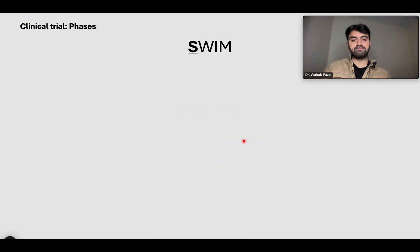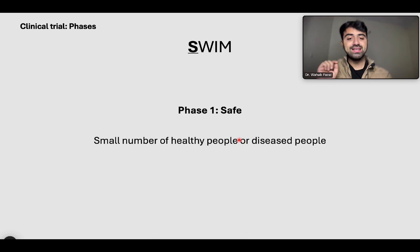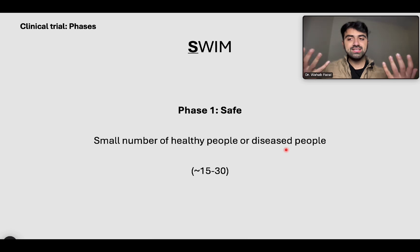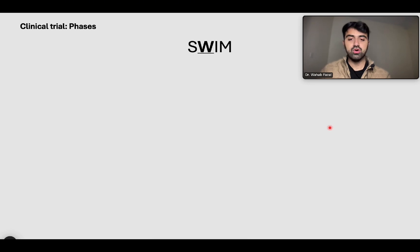Phase one: as I said, S — safe. Is it safe? You take a very small number of healthy or diseased people and check if the medication is safe. You want to make sure the medication's safety profile is okay. That's why you take a very small number — 15 to 30 people — and you try out the medication to see if it's safe.